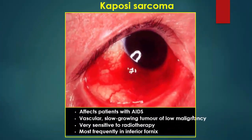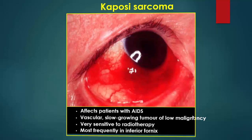Kaposi sarcoma affects patients with HIV. It is a vascular, slowly growing tumor of low malignancy. The tumor is very sensitive to radiotherapy and is most frequently found in the inferior fornix.